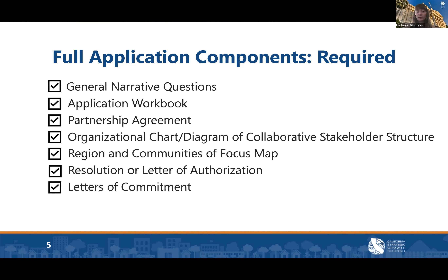We also require a partnership agreement — there's information in our guidelines on the requirements, and we've provided a template you're welcome to use. We ask for an organizational chart or diagram of the collaborative stakeholder structure showing how all partners will work together. We're also looking for a region and communities of focus map showing the regional boundary and the communities of focus you'll be selecting. TA providers will be able to provide mapping support if applicants need it.